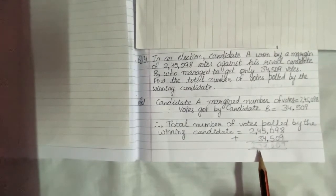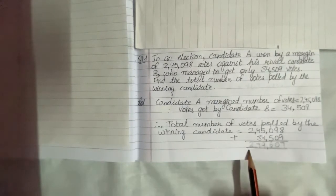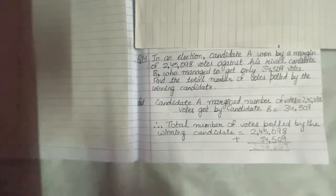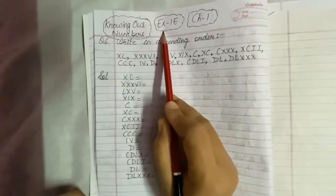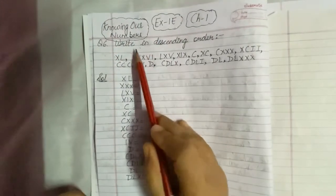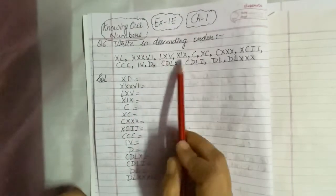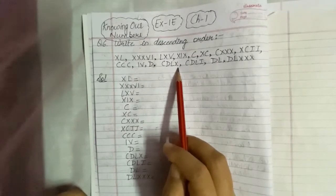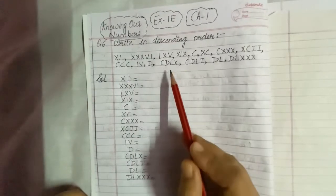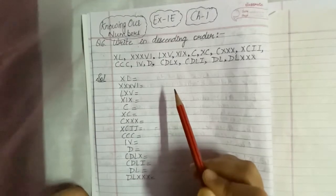I hope question number 14 is also clear to you. Next, I have taken question number 6 of exercise 1E for revision. It says write in descending order. Some Roman numerals are given and you have to write them in descending order. Firstly, please convert these Roman numerals into Hindu-Arabic numerals.